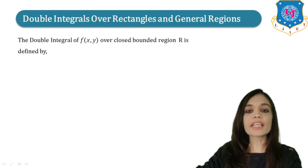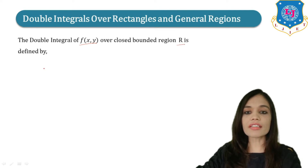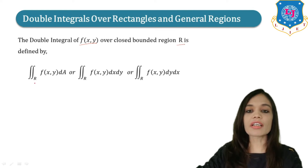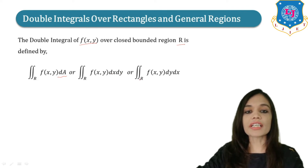The double integral of f(x, y) over a closed bounded region R is defined as the double integral over R of f(x, y) dA. It can also be written as double integral over R of f(x, y) dx dy, or as double integral over R of f(x, y) dy dx.